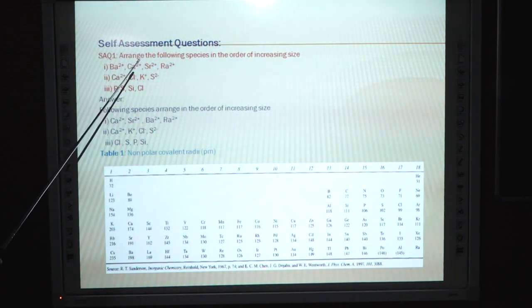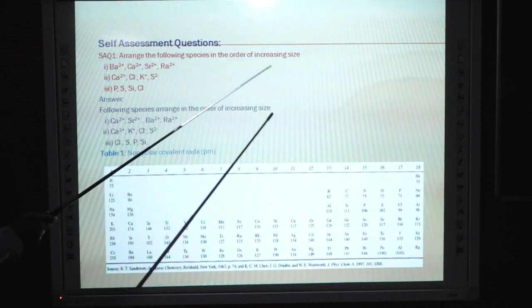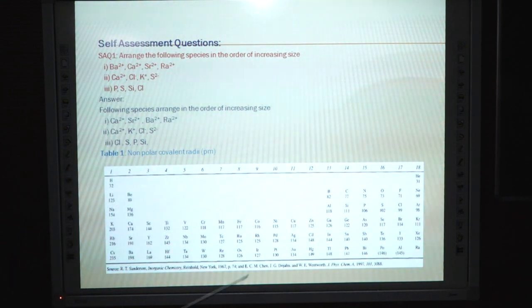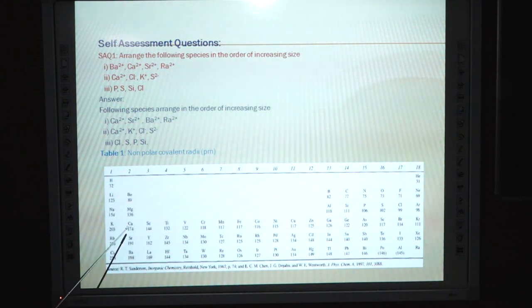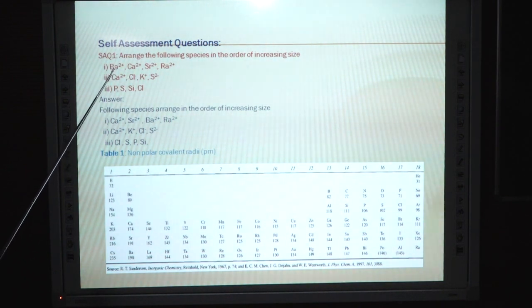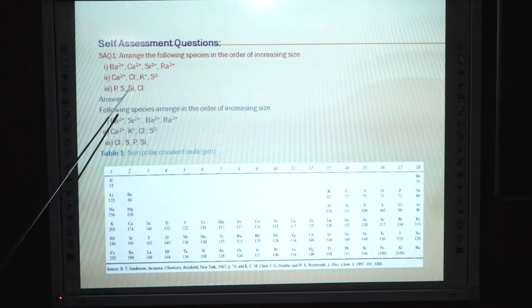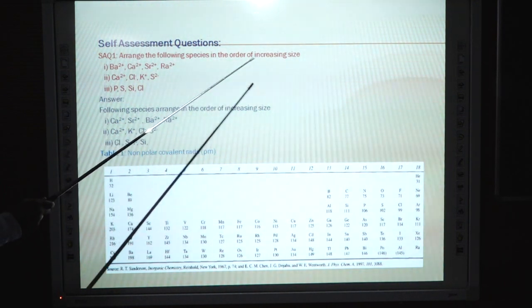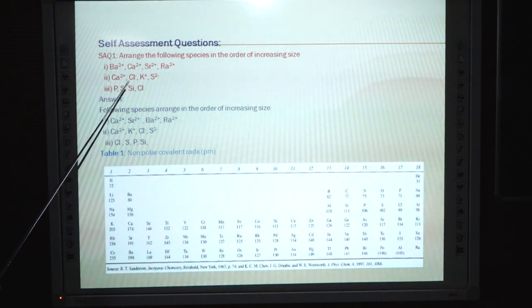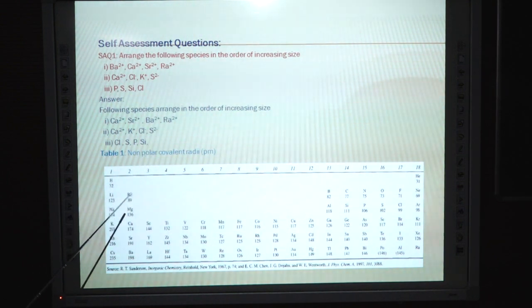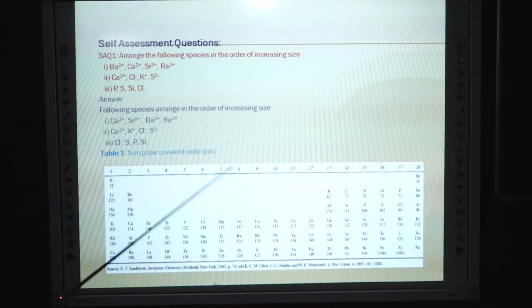Self-assessment question 1: Arrange the following species in order of increasing size — barium, calcium, strontium, radium. All have a 2+ charge. In a group, size increases from top to bottom. The order of increasing size is: calcium < strontium < barium < radium.